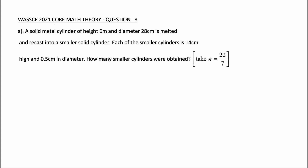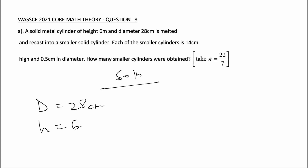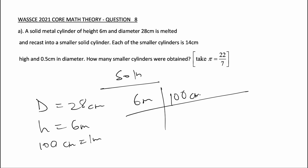So let's begin with our solution for question 8a. A bigger cylinder is melted and recast into smaller cylinders. The diameter of the bigger cylinder is 28 centimeters and the height is 6 meters. But we are working in centimeters, so we convert 6 meters: since 100 centimeters equals 1 meter, 6 times 100 gives us 600 centimeters. So the height of the bigger cylinder is 600 centimeters.